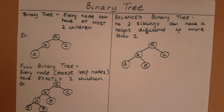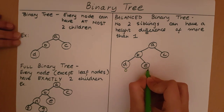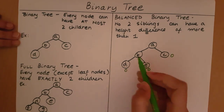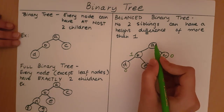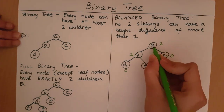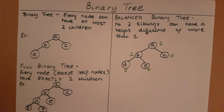Take this tree. The first thing we need to do to check whether it is a balanced binary tree is to find the height of all nodes. D, E, and C are leaf nodes, so they have a height of zero. B has a height of one. A has a height of two, which is one more than the maximum height of its children.